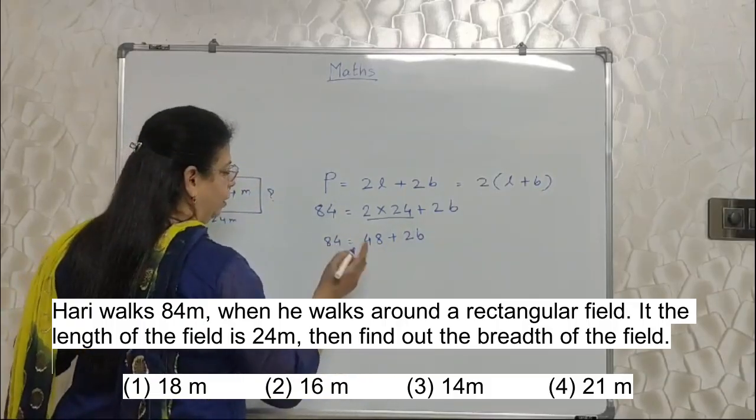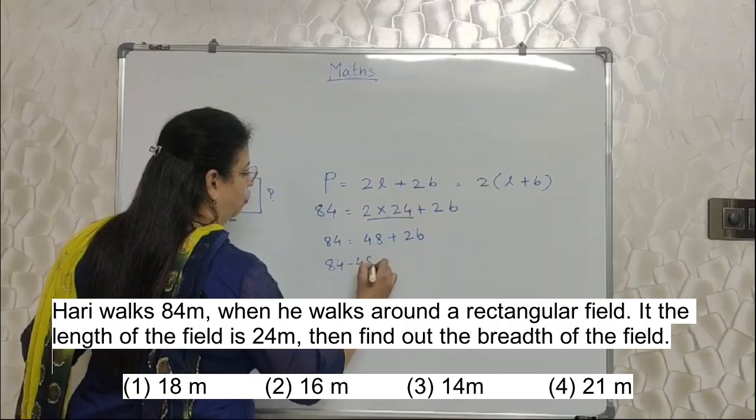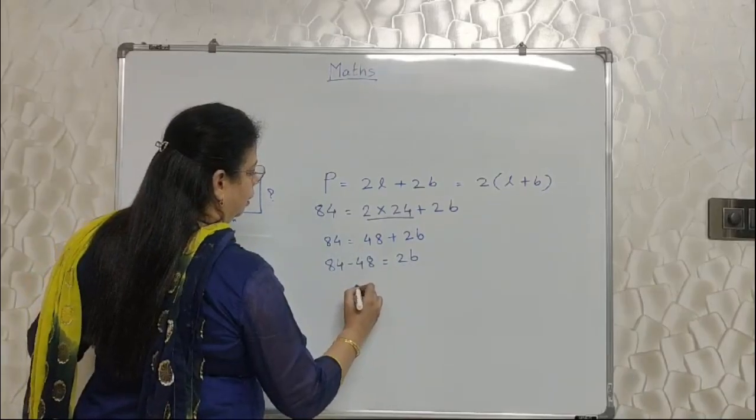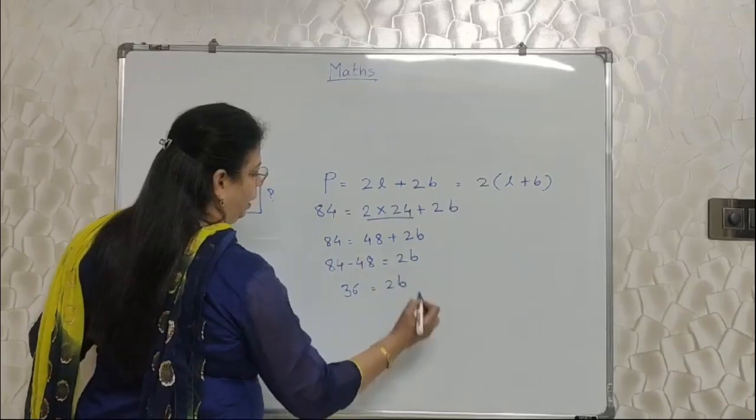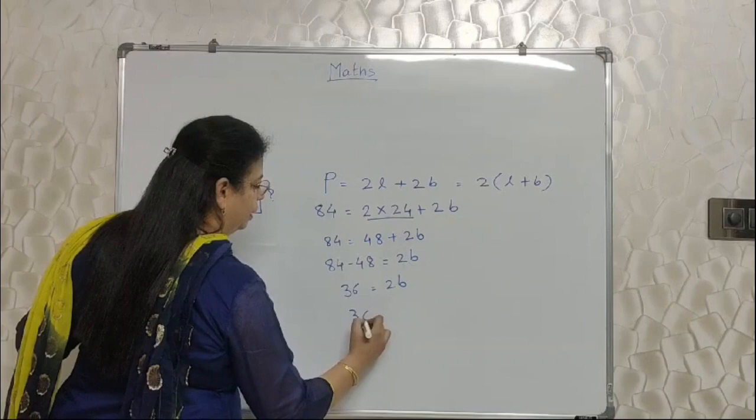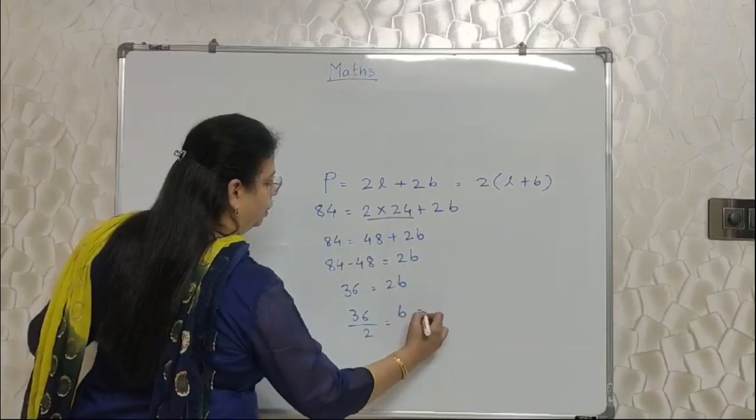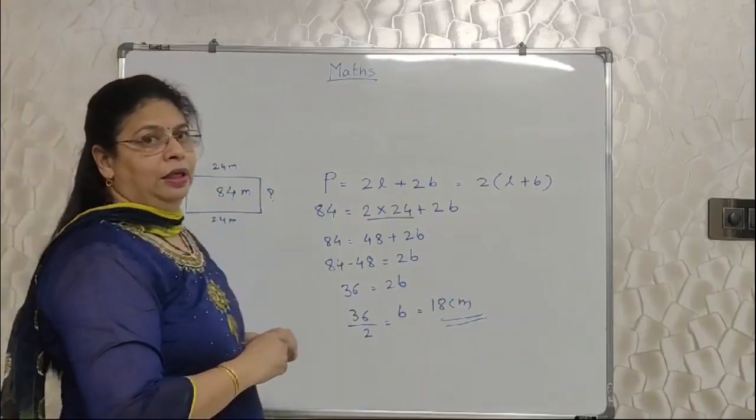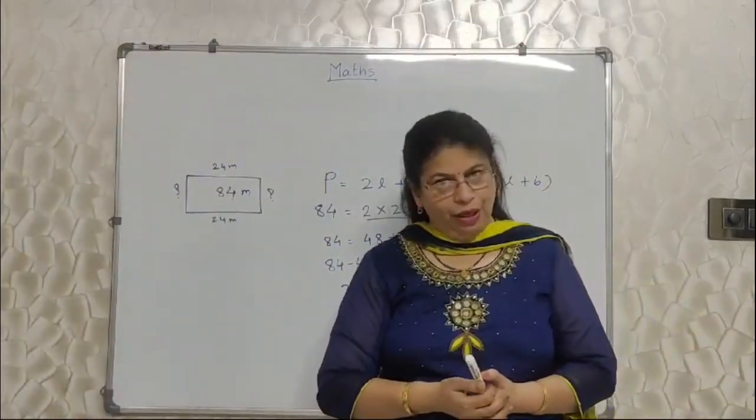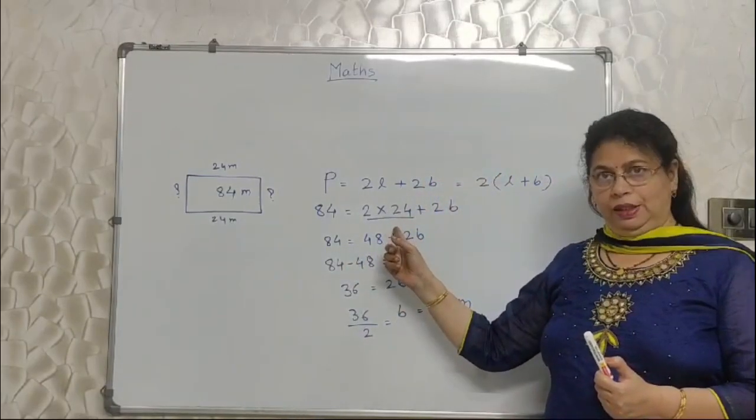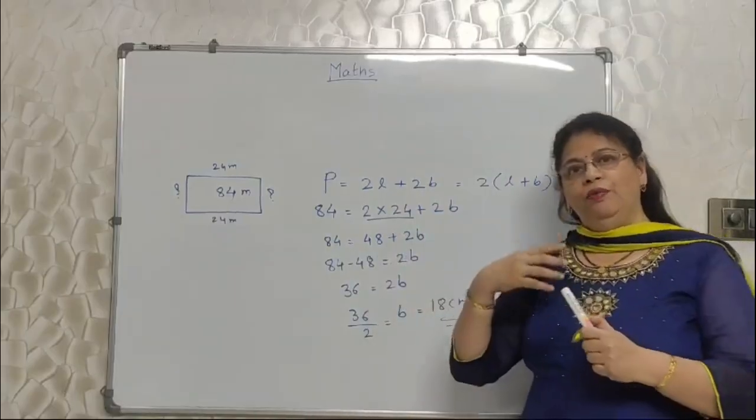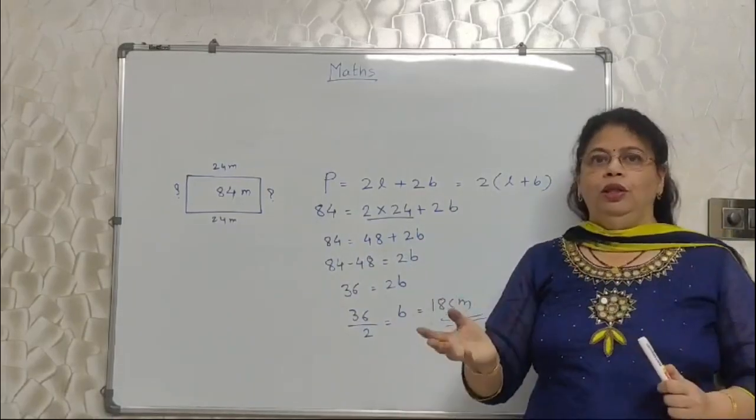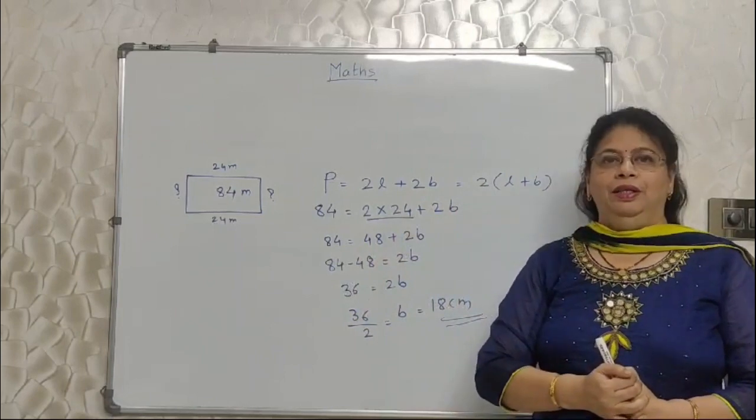Now 48 we are taking it to the other side of equal to, so it will be minus 48, and here what will remain? 2B. Now this is 36, right? 2 times B. So 1 times B will be 36 divided by 2, that will be B, which is same as 18 centimeter. That is what they have asked. Right? This sum is based on formula, which is the formula of perimeter. And in that, we need to observe the BODMAS and solve it. Sometimes they will give you breadth, they will ask length. Sometimes they will give you length and ask for breadth. In this case, right? Sometimes they will give you both and they will ask you to find out the perimeter. So simple, the formula is same.